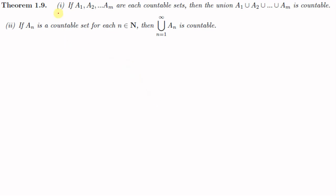Here we have a theorem. The first part: if A1, A2, ..., Am are each countable sets, then the union A1 ∪ A2 ∪ ... ∪ Am is countable. The second part: if An is a countable set for each n ∈ ℕ, then the union ⋃(n=1 to ∞) An is countable. In the first part you show that if each of A1, A2, ..., Am are countable then their union is countable. In the second part you show that the infinite union ⋃(n=1 to ∞) An is countable.